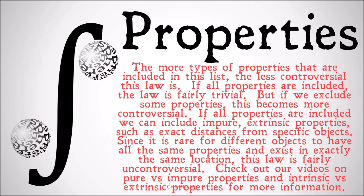So the more types of properties that are included in this list of what we can use, the less controversial the law is. If all properties are included, the law is fairly trivial because we can have things like location, time of creation, location of creation, and so on, of an individual object that make it very hard for two objects that are actually distinct to have the same properties in all possible senses. If we exclude some properties, this becomes much more controversial. If all properties are included, we can include impure extrinsic properties, such as exact distances from specific objects. Since it's rare for different objects to have all the same properties and exist in exactly the same location, this law is fairly uncontroversial.